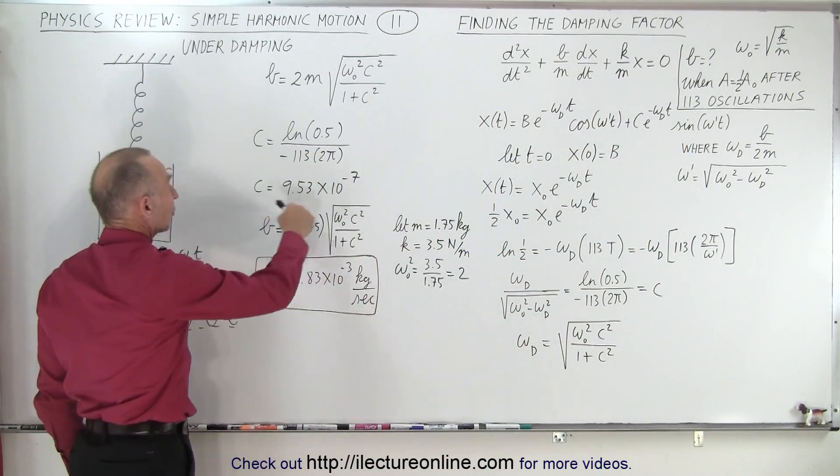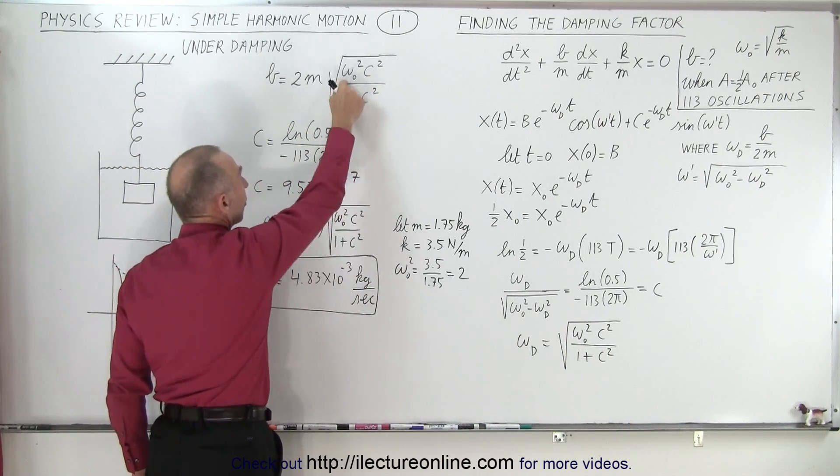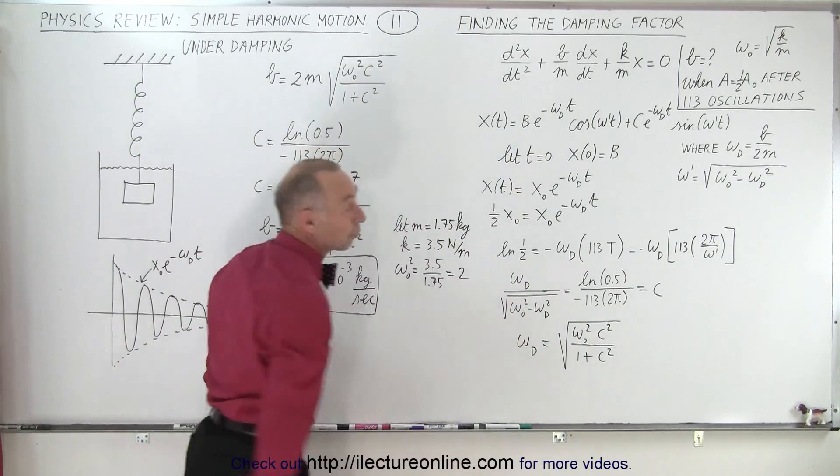we can plug that into this equation to find b. So notice we have omega sub, we have c here, now we have numerical value. Omega sub naught is simply taking the square root of k over m.